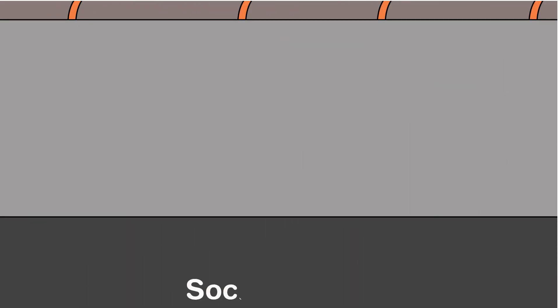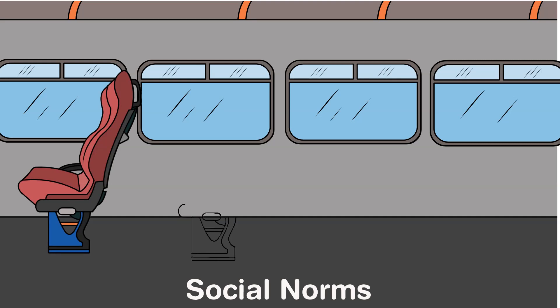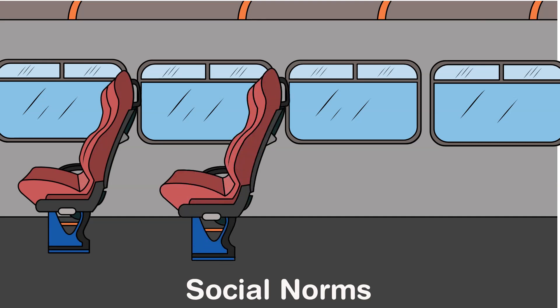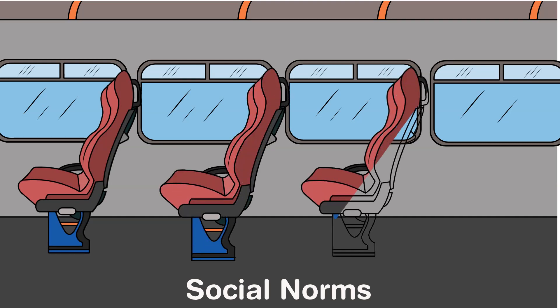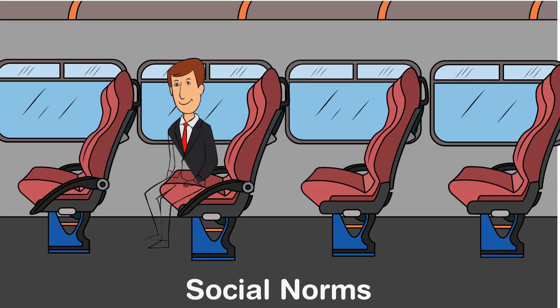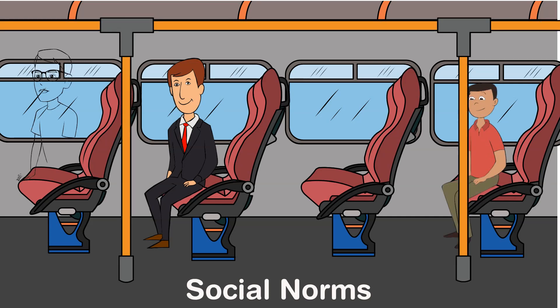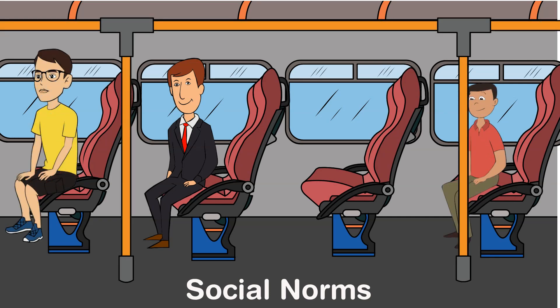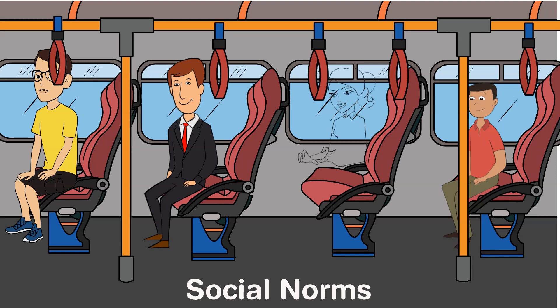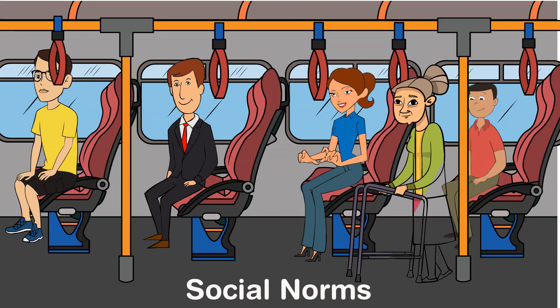Without our adherence to social norms, social norms marketing would not nor could not be an effective form of persuasion. But what are social norms? Social norms are simply the accepted standard that we have for behavior within society and our social groups, and we tend to look at them as unwritten rules. An example of this is when we see an elderly person or a pregnant woman on public transportation, we should give up our seat for them.